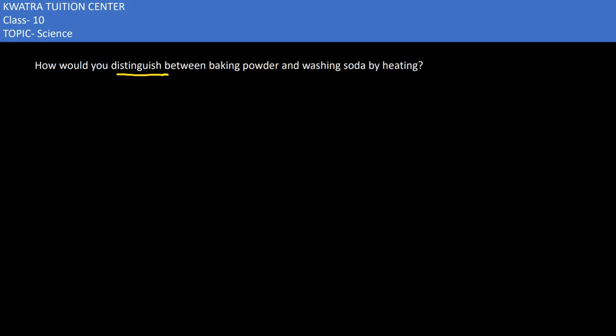In the fifth part, it asks how would you distinguish between baking powder and washing soda by heating. So what happens with baking powder? Whenever we heat baking powder, what does it give you as an end product?